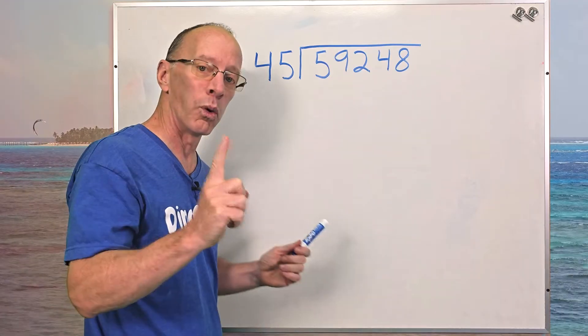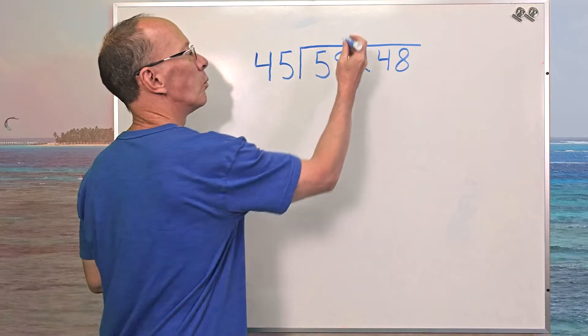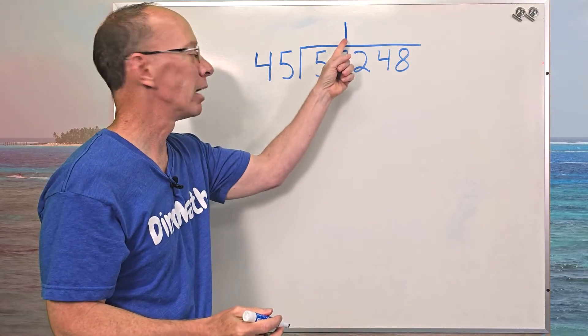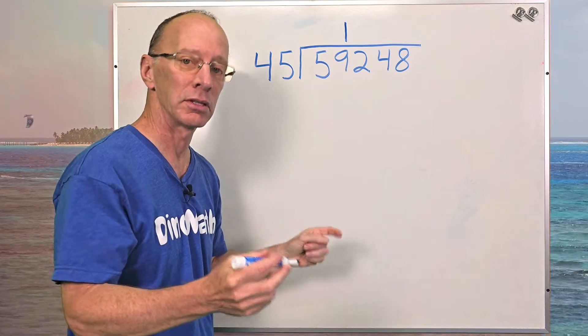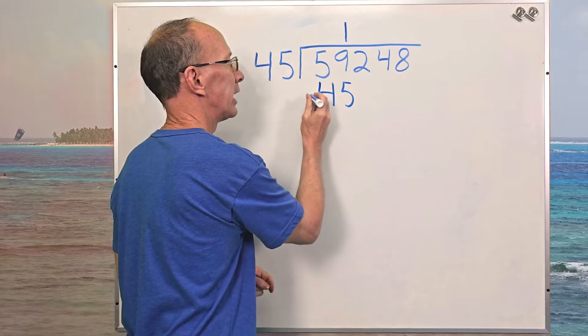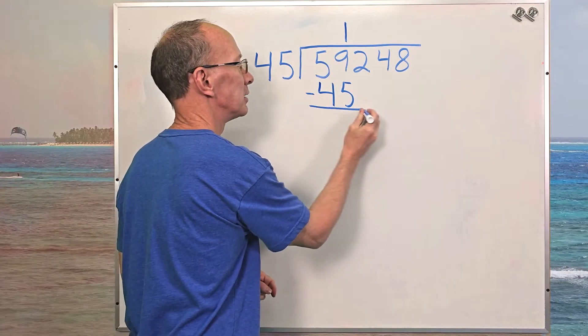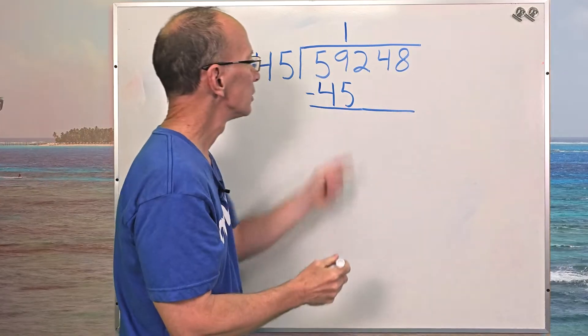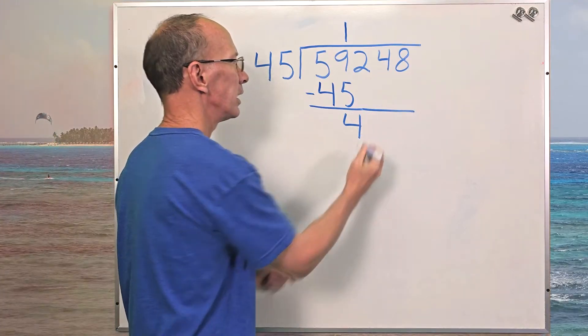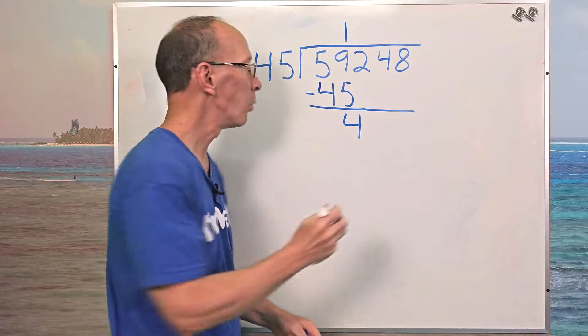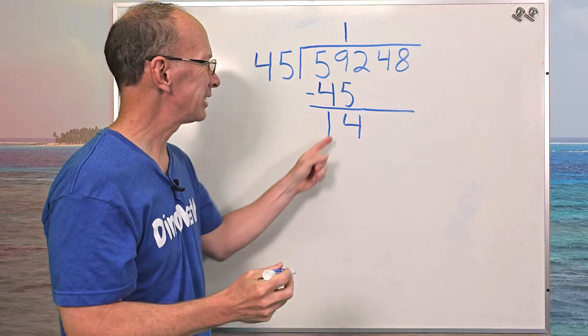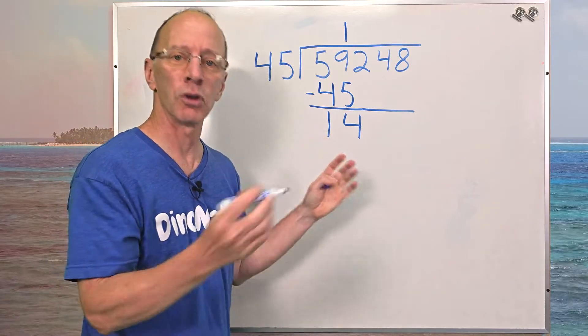How many times can you put that in there? One time. So I put the one right above the nine right there. Now I'm going to do multiplication. One times 45 equals 45, so I put 45 right here. And now my next step is subtraction.